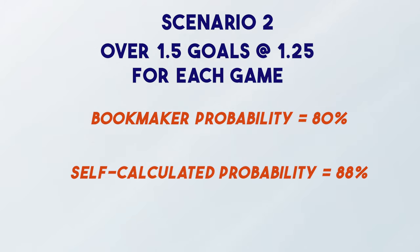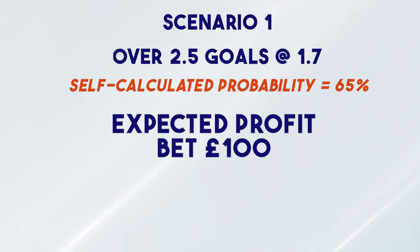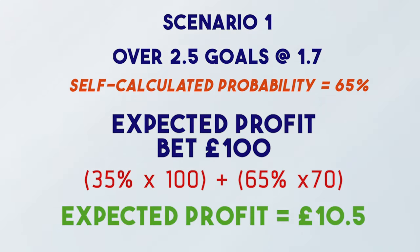Going back to scenario one — betting 100 pounds on over 2.5 goals — the expected profit works out as follows: there's a 35% chance of losing your 100-pound stake and a 65% chance of returning 170 pounds including stake, giving 70 pounds profit. The expected value of this bet is 10 pounds 50 pence. If you ran this bet a million times, in the long run you'd be in profit by that amount per bet.